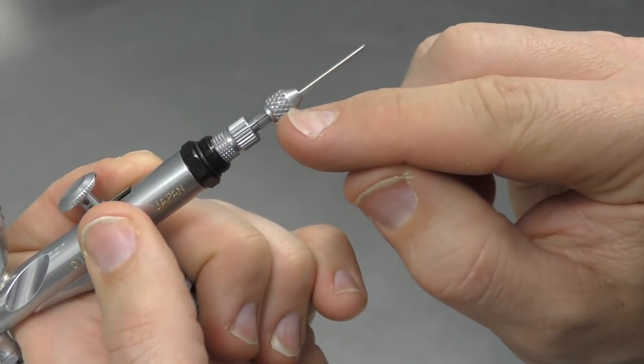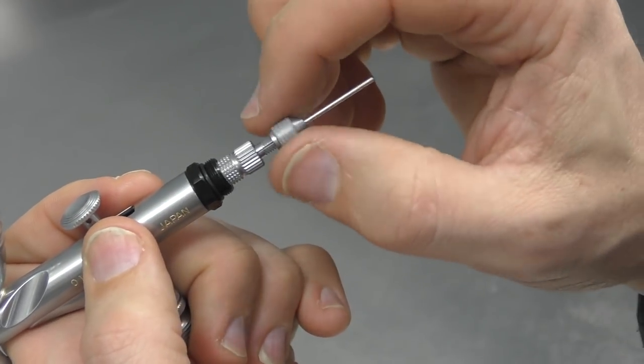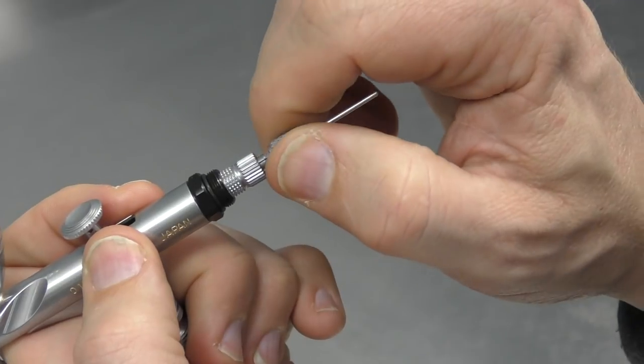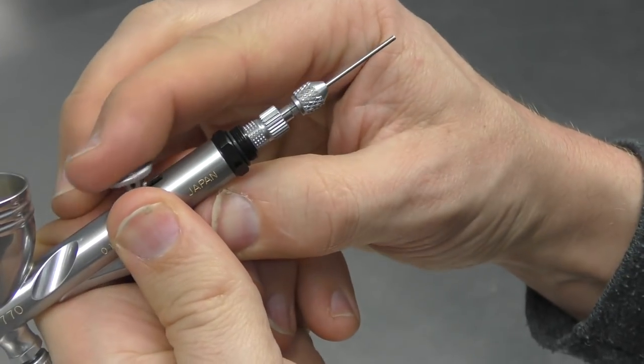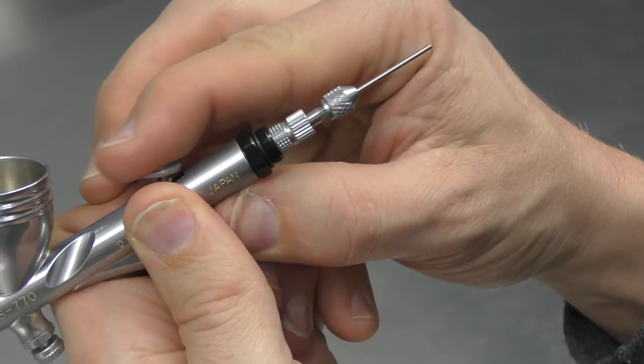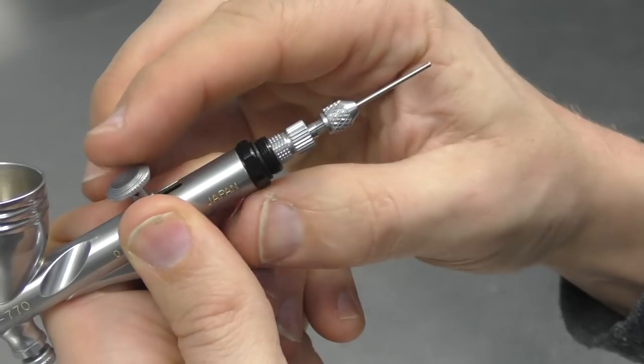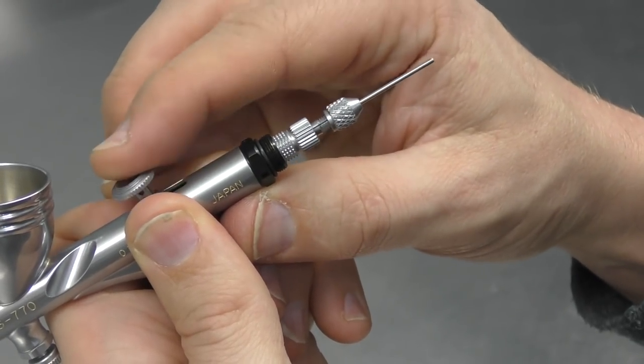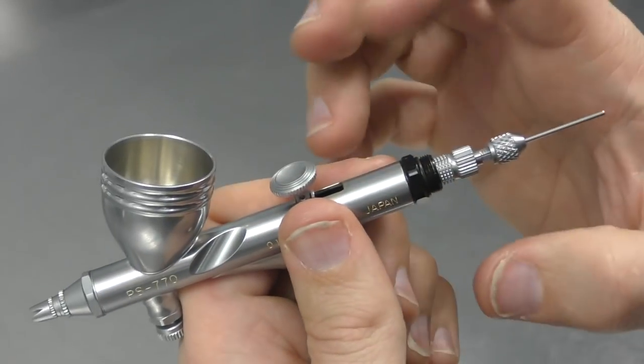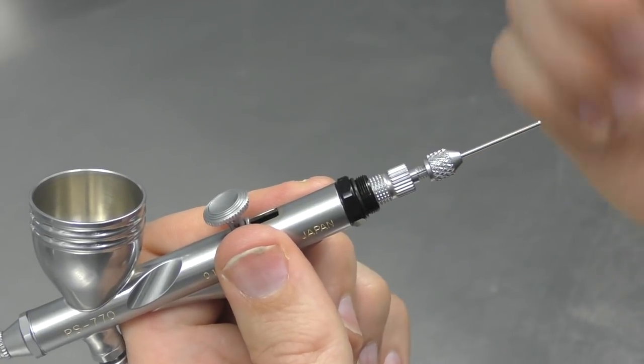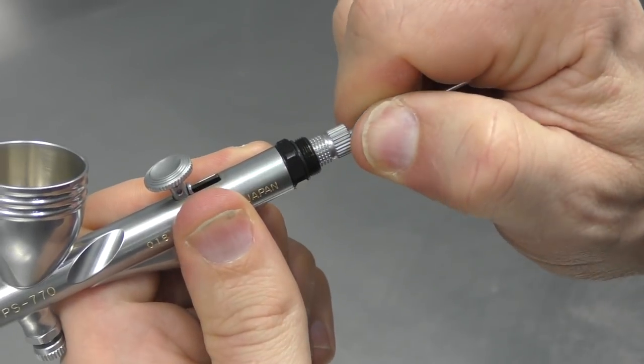Now remember you need to re-tighten this. Because as I just mentioned earlier, that's what holds the needle into place. And if you want to test it you can see I'm pulling back and the needle is moving back and forth. If that's loose it's not going to do anything. And you're going to put paint in there and wonder why when you're pulling back for paint nothing's happening. So tighten that up.